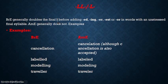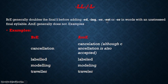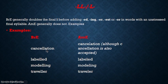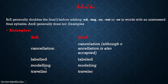Next we have double-L versus single-L. British English generally doubles the final L before adding suffixes -ed, -ing, -er, -est, or -or in words with an unstressed final syllable, while American does not double the final L. For example: cancellation (double-L in British) vs. cancellation (single-L in American); labelled vs. labeled; modelling vs. modeling; traveller vs. traveler.